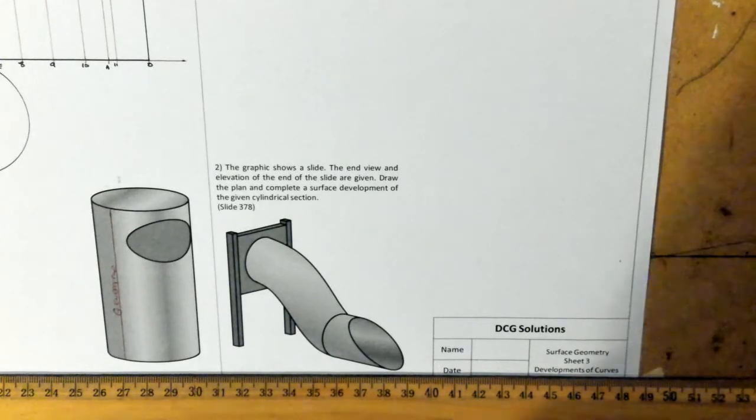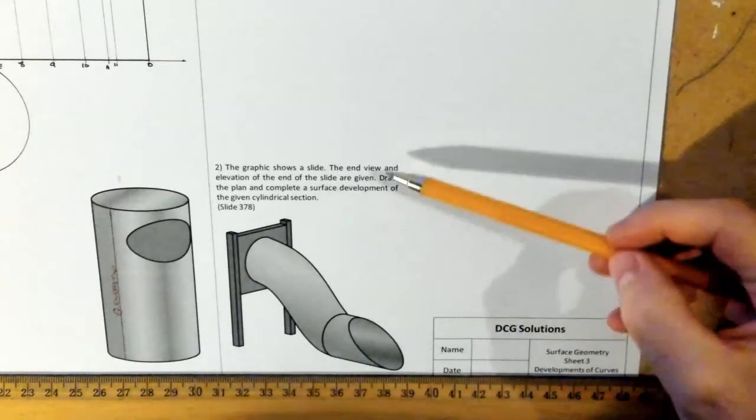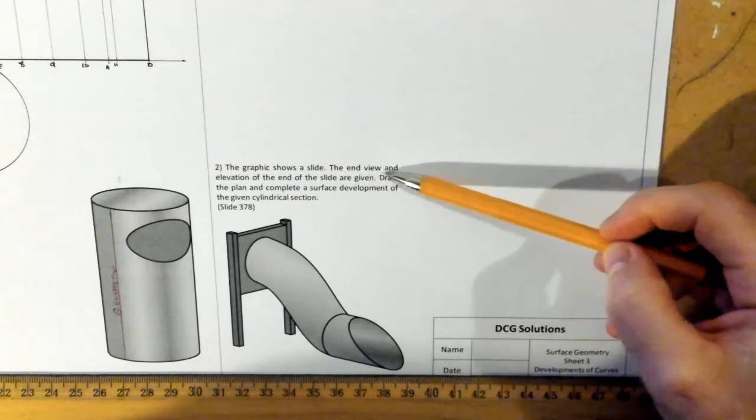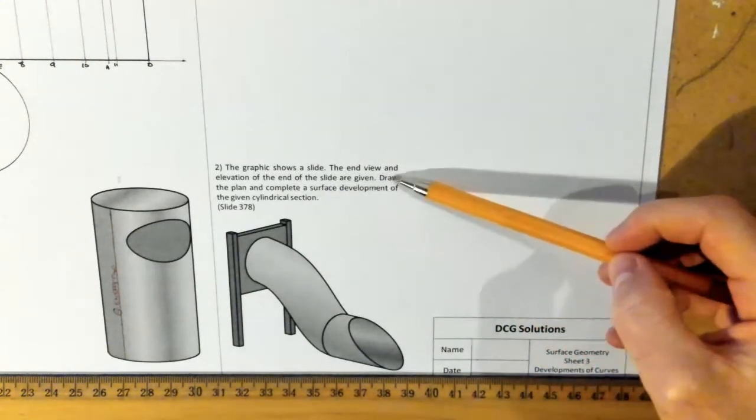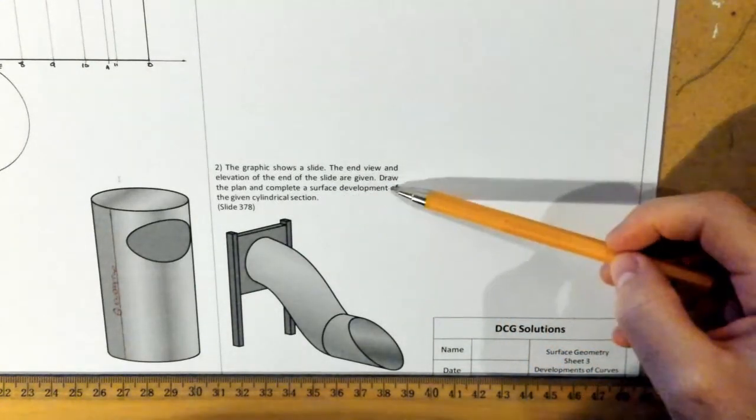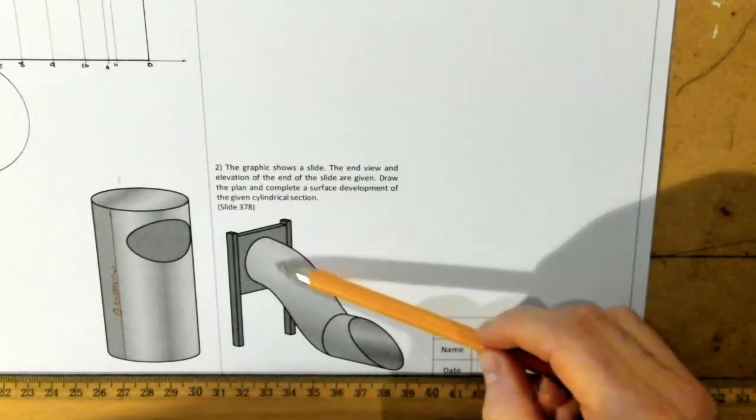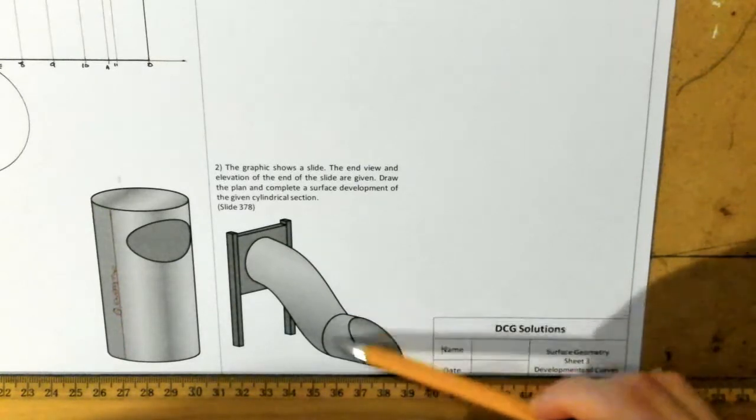Alright guys, so what we're going to do on the second question on this page, it says the graphic shows the slide here, the end view and elevation of the end of the slide are given. This is a picture of the slide here, a 3D graphic of it.